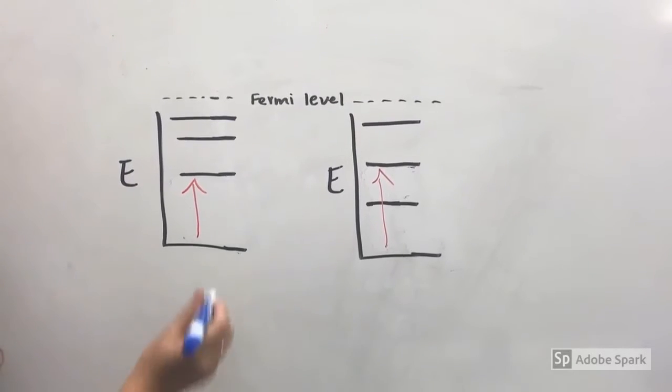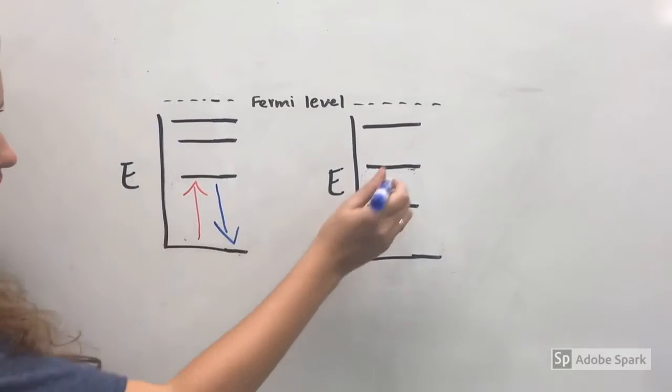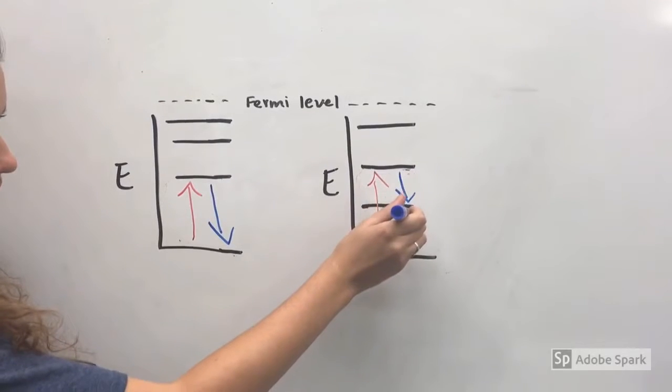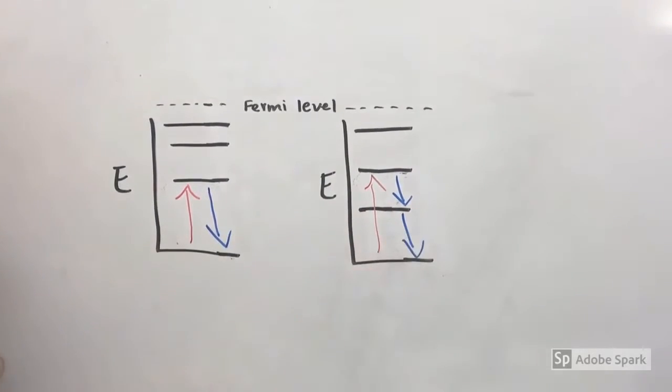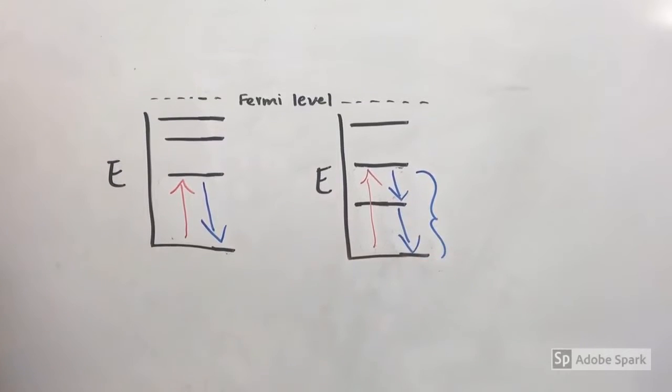To do this, the electron must emit a photon or photons of specific energies, and therefore specific wavelengths, that sum to exactly the amount of energy that the electron originally absorbed.